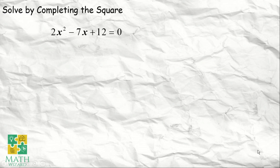Let's have our next example: 2x squared minus 7x plus 12 is equal to 0. We need to move 12 to the right side of the equation. So, this becomes 2x squared minus 7x is equal to negative 12.